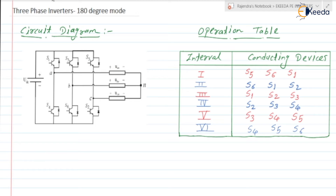The input is the DC voltage, Vdc. For the three-phase inverter, the output is a three-phase balanced AC output. The three-phase balanced AC means the phase difference between the three line voltages as well as the three phase voltages should be 120 degrees. The peak value of all line voltages and phase voltages should be the same, and therefore the RMS values are also the same. The frequency of all line and phase voltages should also be the same.